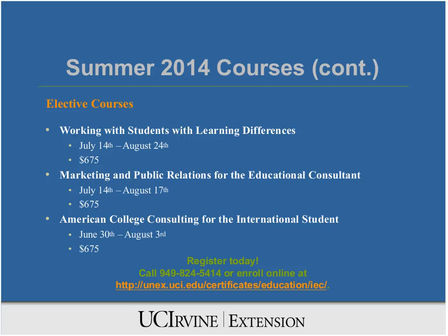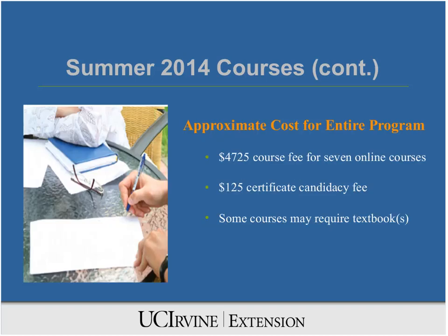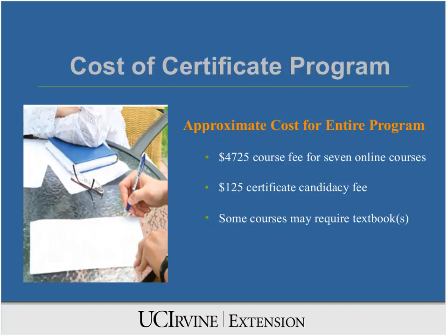Each course in our program costs $675, so you're looking at $4,725 in course fees for the seven online courses. You don't pay the entire total up front — you simply pay for each course individually at the time of enrollment. There is also a $125 certificate candidacy fee, bringing the total to $4,850. Please note that amount does not include textbooks, which some courses may require. Textbook information is posted on the enrollment page, so you'll know if course materials are required before you enroll.